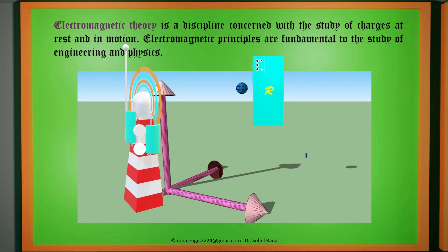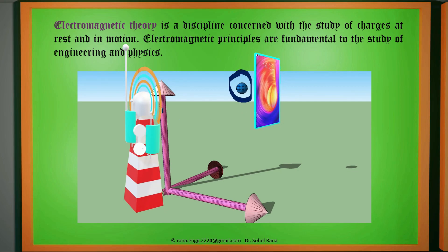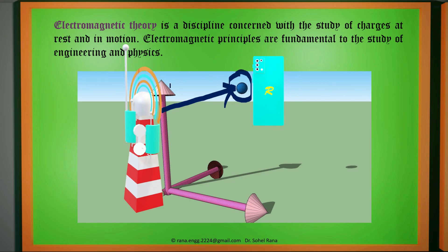In general, electromagnetic theory is a discipline of physics and engineering where we study charges at rest and in motion. We will first understand the effect on a static charge — that comes under electrostatics. Then we will study the effect on moving objects, such as a mobile phone moving from one place to another while communicating with an antenna, meaning particles of the electromagnetic wave are in motion. So we study charges both at rest and in motion.